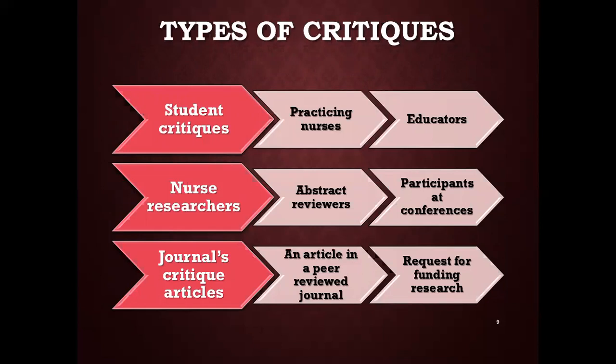Types of critics. There are nine types of critics, ranging from student critics to critiques of research proposals. They include: student critics, practicing nurses, educators, nurse researchers, abstract reviewers, participants at conferences or workshops, journals, critique articles, articles in peer-reviewed journals, and requests for funding research.